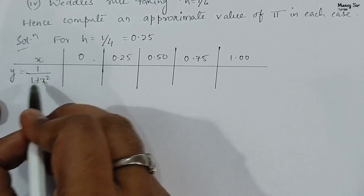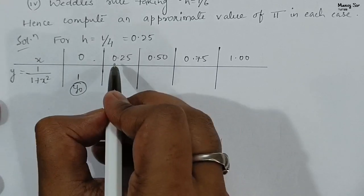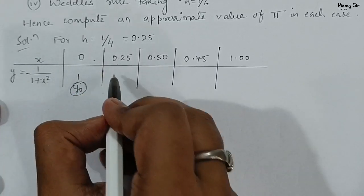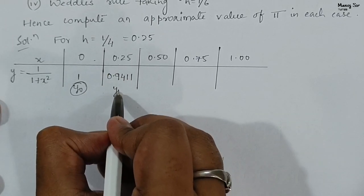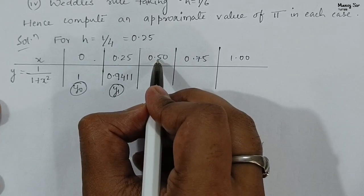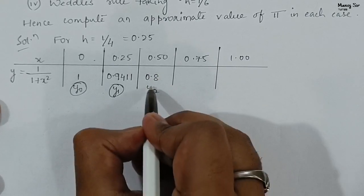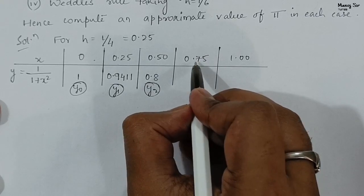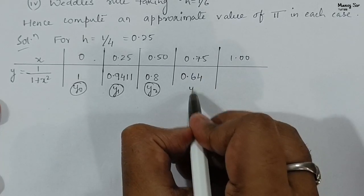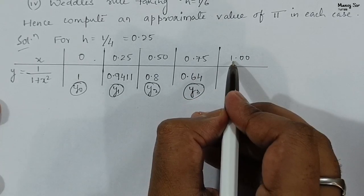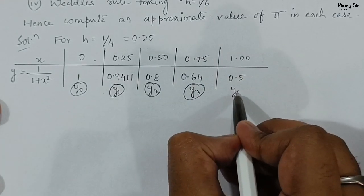Putting x = 0, y = 1, which is y₀. Putting x = 0.25, y = 0.9411, which is y₁. Putting x = 0.5, y = 0.8, which is y₂. Putting x = 0.75, y = 0.64, which is y₃. Putting x = 1, y = 0.5, which is y₄.